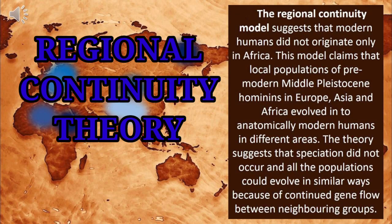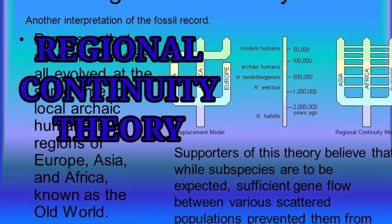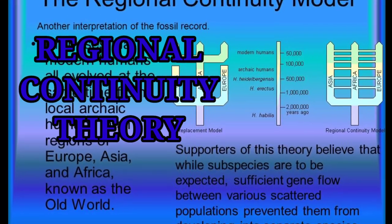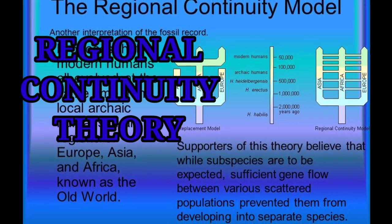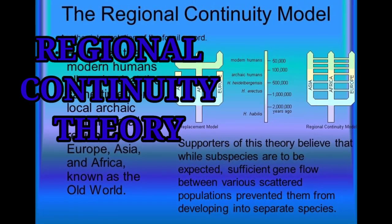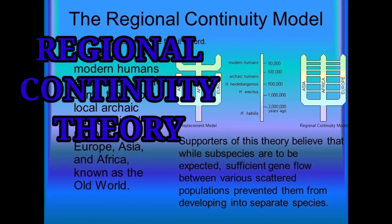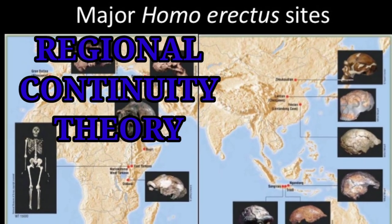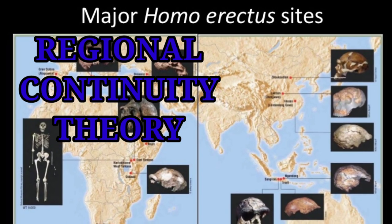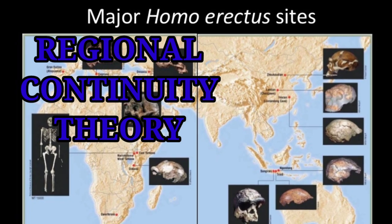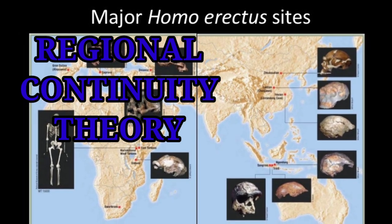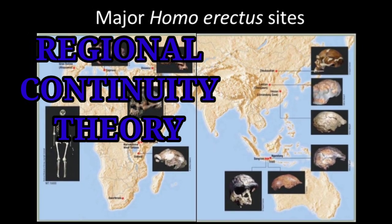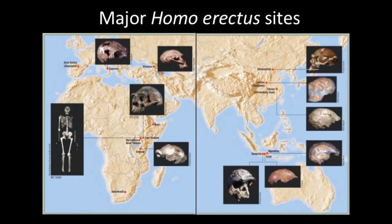The second theory is the regional continuity theory. According to this theory, the evolution of different human species from earlier species occurred in all regions of the world — not only in Africa but also in Europe and Asia. The evolution proceeded at different rates in different regions. The dissimilarities among human populations in different regions of the world serve as evidence for this theory.